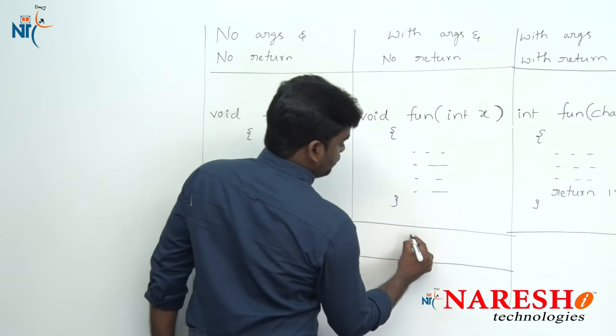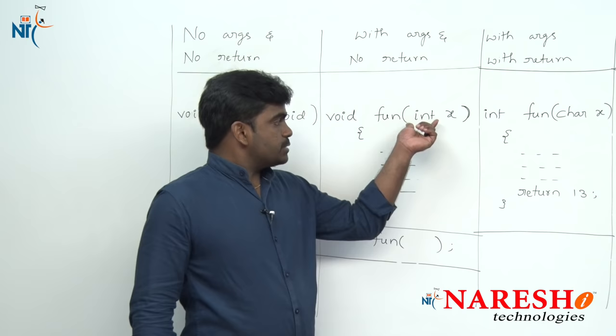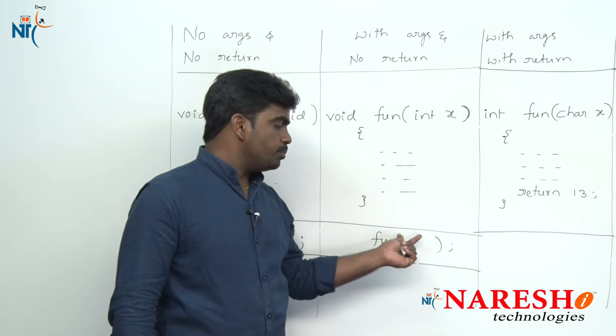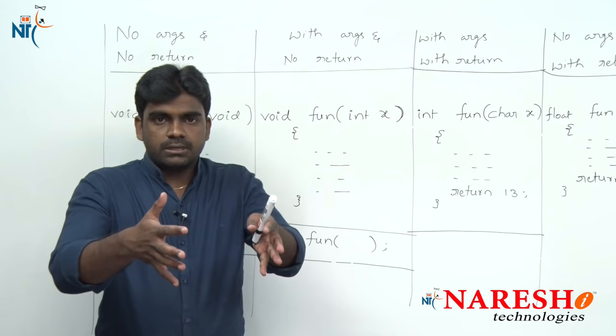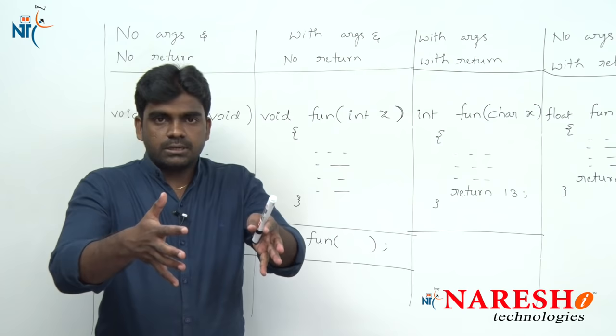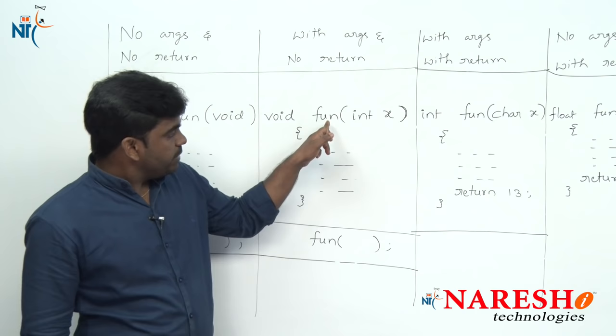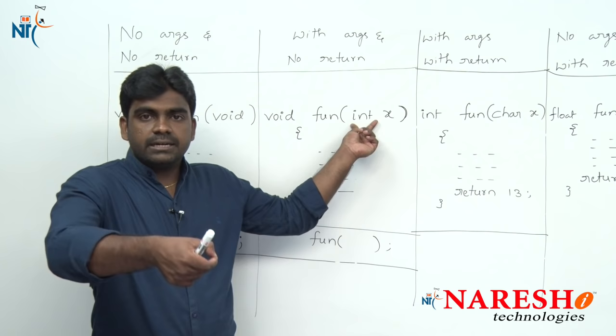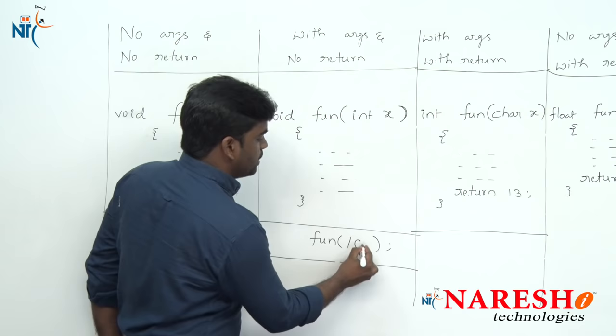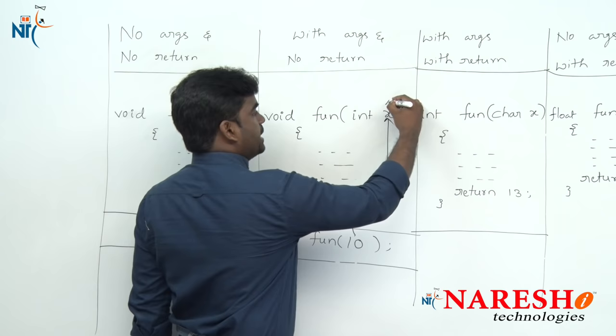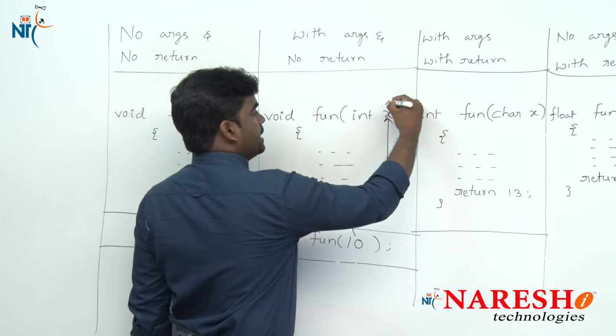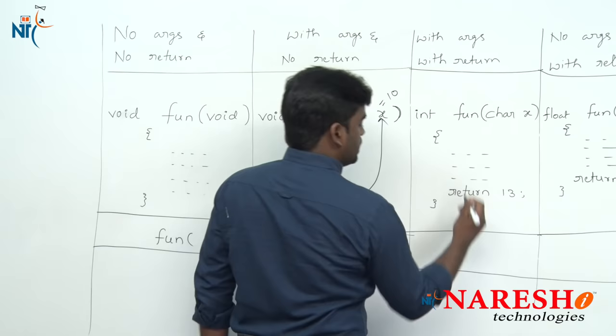For the second classification, the function definition expects an integer, so you have to pass an integer. Just as a bank expects an amount from you for a deposit operation, you must pass that value so they can process it. Whenever you call this function, pass an integer — suppose 10. That 10 will be stored into x, and x value becomes 10. It will then process 10. But since it is not giving anything back, no need to collect anything.